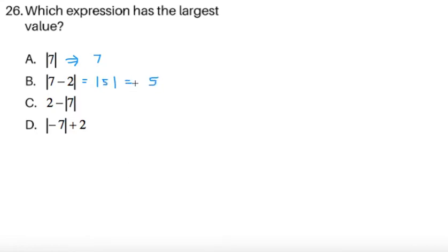So we can already cross B out because B is smaller than A. Now let's see here. 2 minus the absolute value of 7. We can write this as 2 minus absolute value of 7, that's 7. So 2 minus 7, well, negative 5, too small. So let's cancel C already.